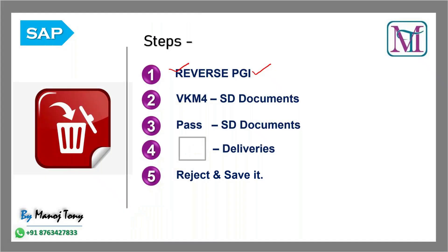Then the second step — go to VKM4. VKM4 is used for credit management. If a delivery is blocked for credit, we can release it using transaction code VKM4. If it is a delivery blocked for credit, we can also delete it using this transaction code.